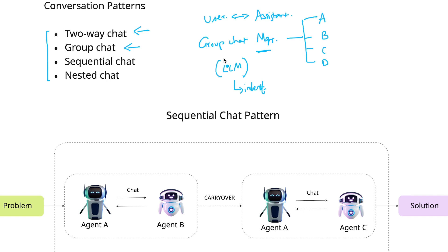The group chat manager acts as an orchestrator which chooses the next speaker, then iterates or broadcasts that particular message to the remaining agents so that all agents are on the same page and context-aware in terms of how the problem is getting solved. For those not comfortable with two-way chat and group chat, please revisit our previous sessions where we have practically implemented both.